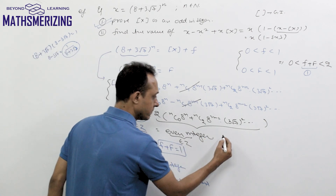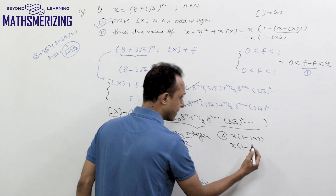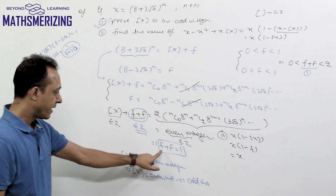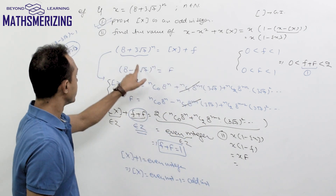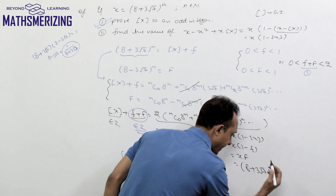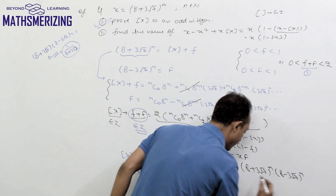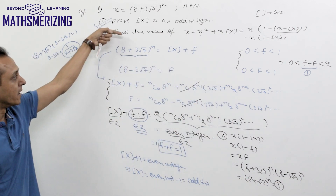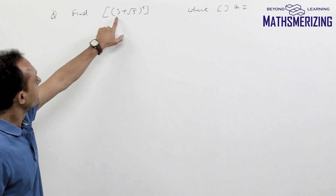For the second part: find x(1 − {x}). Since f + F = 1, we have 1 − f = F. So x(1 − f) = x·F = (8 + 3√7)ⁿ·(8 − 3√7)ⁿ = (64 − 63)ⁿ = 1ⁿ = 1. The answer to the second part is 1.